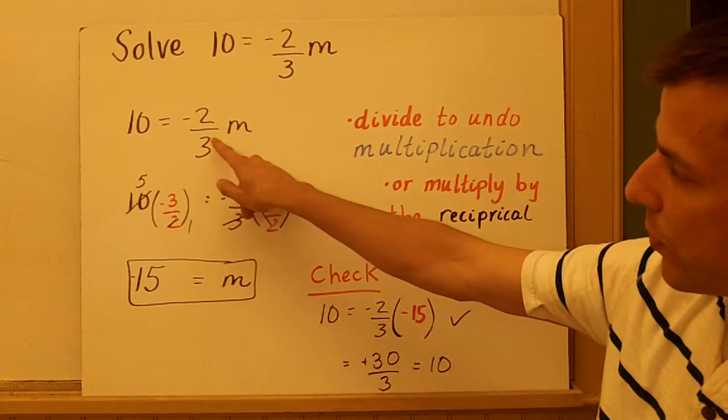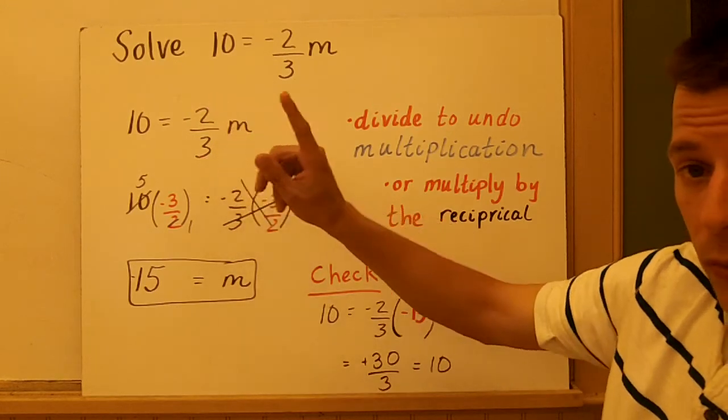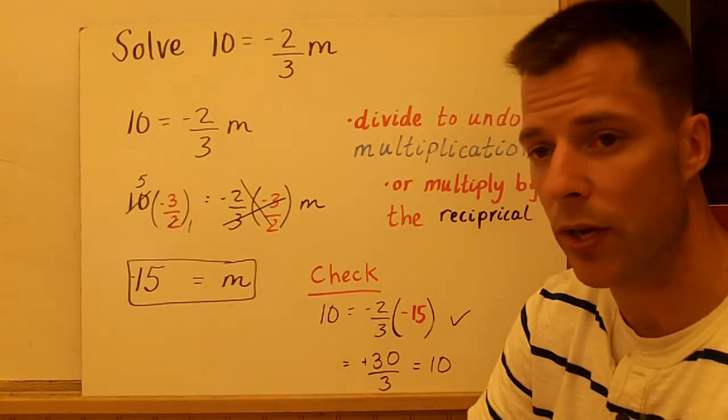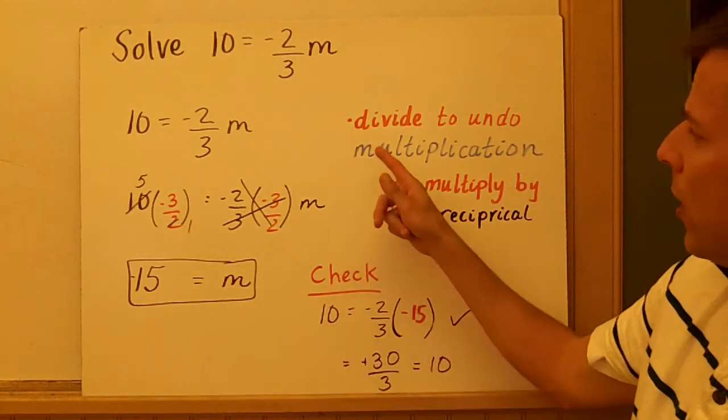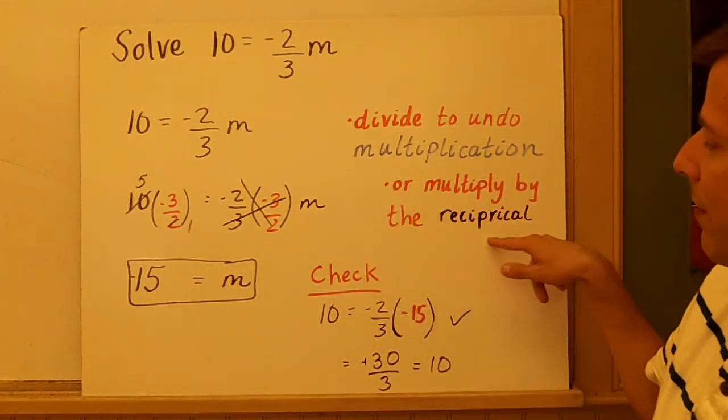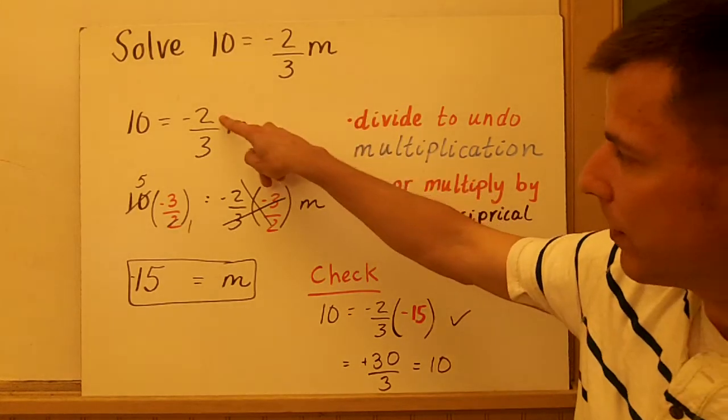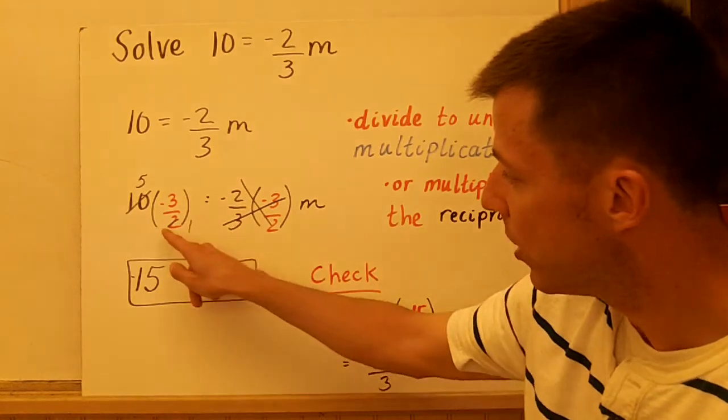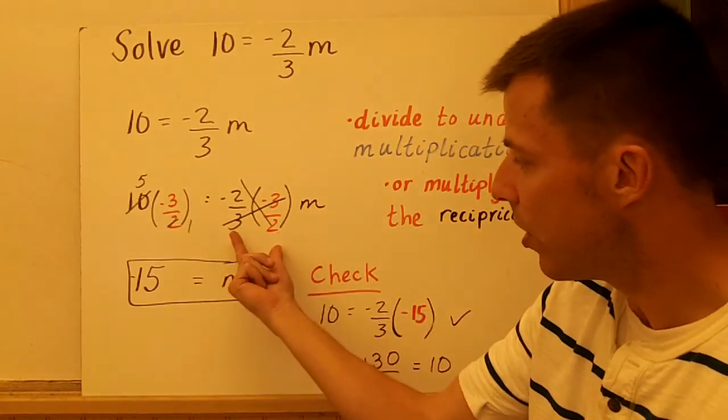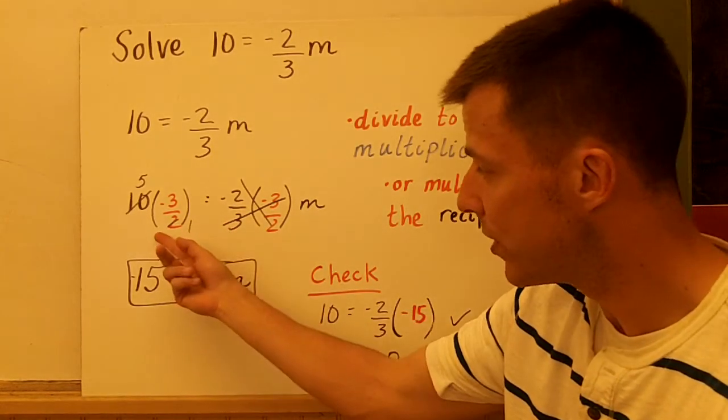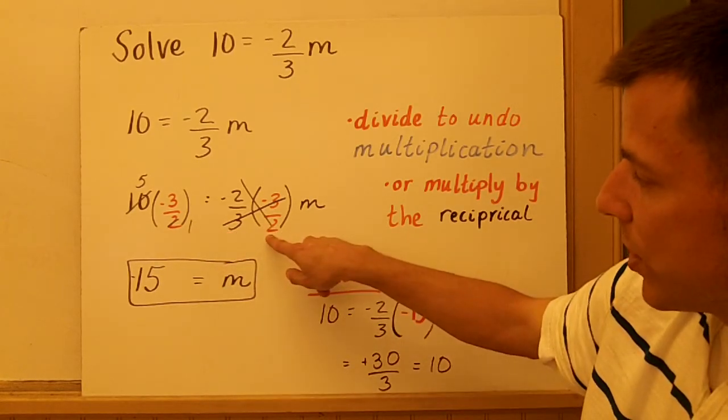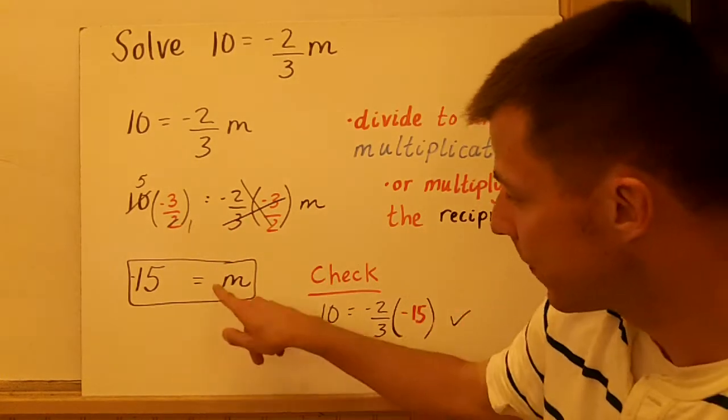Because we want that number in front of the variable to be 1. Anytime you multiply a number by its reciprocal, you get 1. So we're actually going to multiply each side by the reciprocal. The reciprocal of negative 2/3 is negative 3/2. So in red here, you've seen that I multiply each side by the reciprocal. And what happens here? Negative 2/3 times its reciprocal, that equals 1. So you're left with m on the right side.